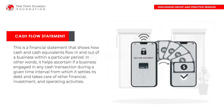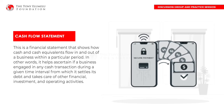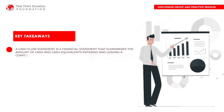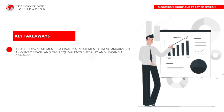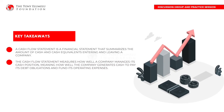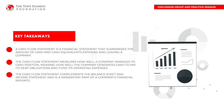Cash flow statement: This is a financial statement that shows how cash and cash equivalents flow in and out of a business within a particular period. It helps ascertain if a business engaged in any cash transaction during a given interval, from which it settles its debt and takes care of other financial investment and operating activities. Key takeaways: a cash flow statement summarizes cash and cash equivalents entering and leaving a company; it measures how well a company manages its cash position to pay debt obligations and fund operating expenses; and it complements the balance sheet and income statement as a mandatory part of a company's financial reports.